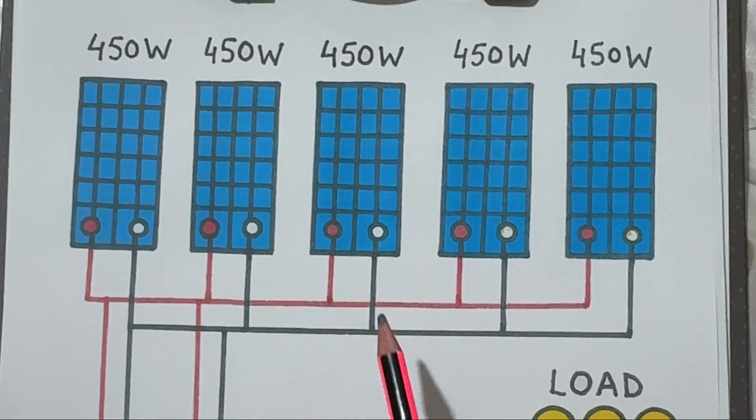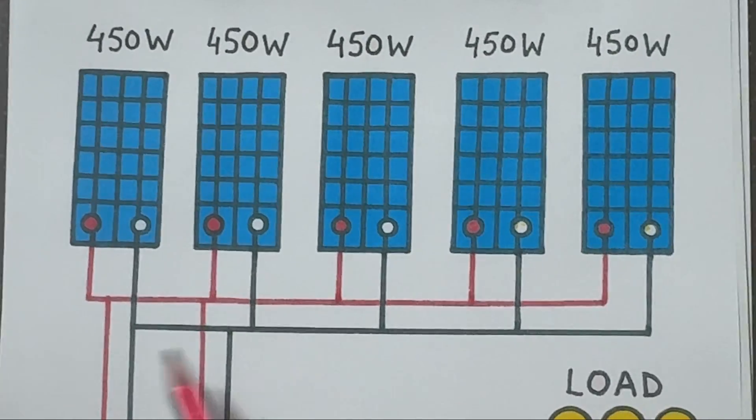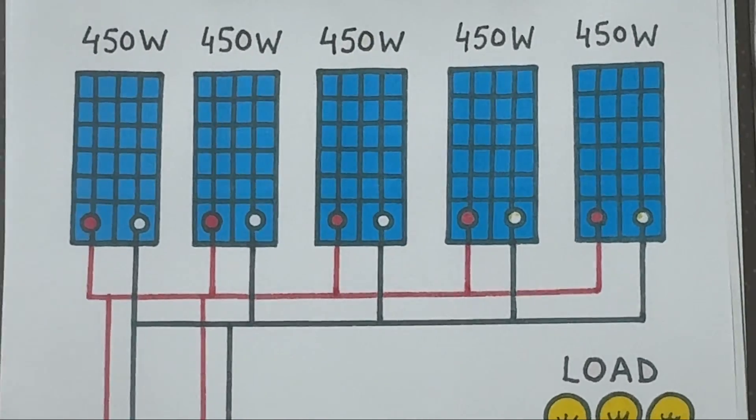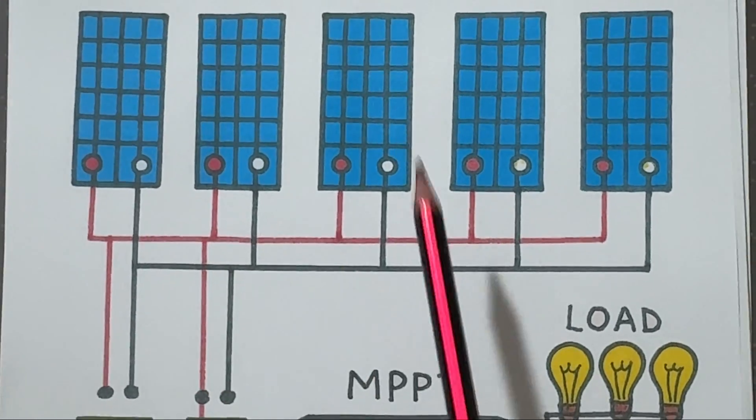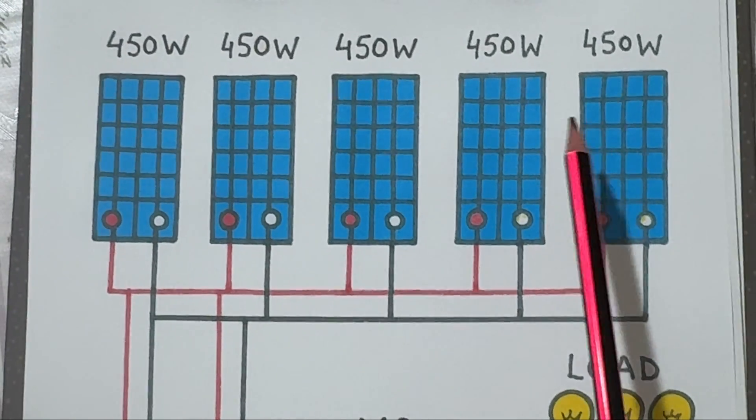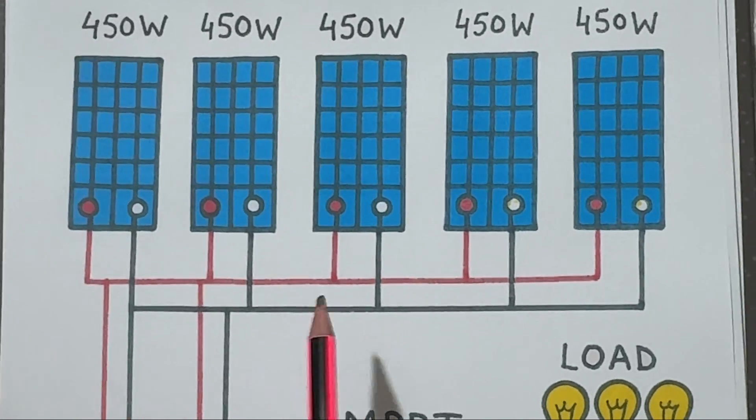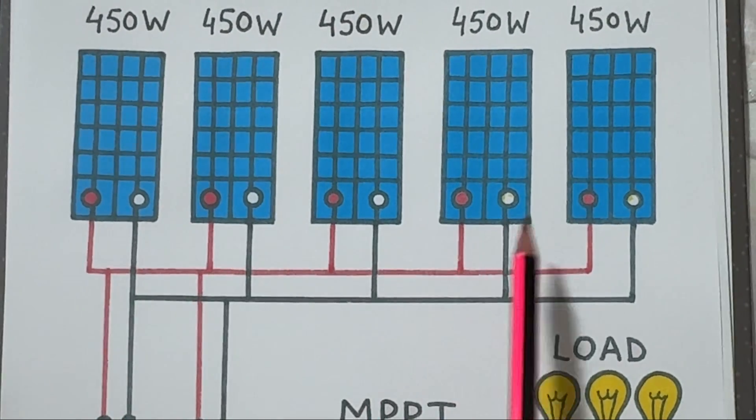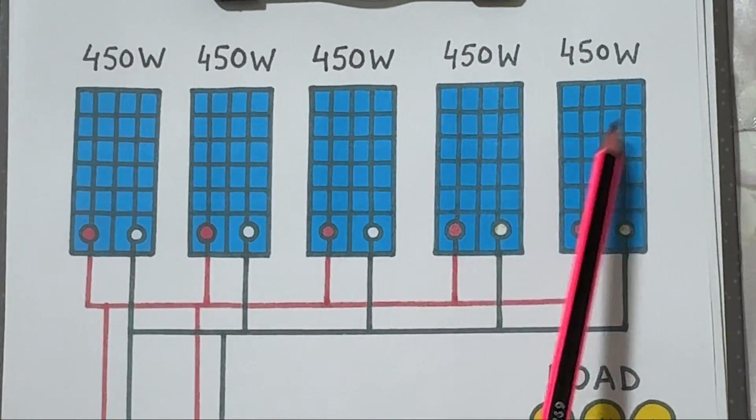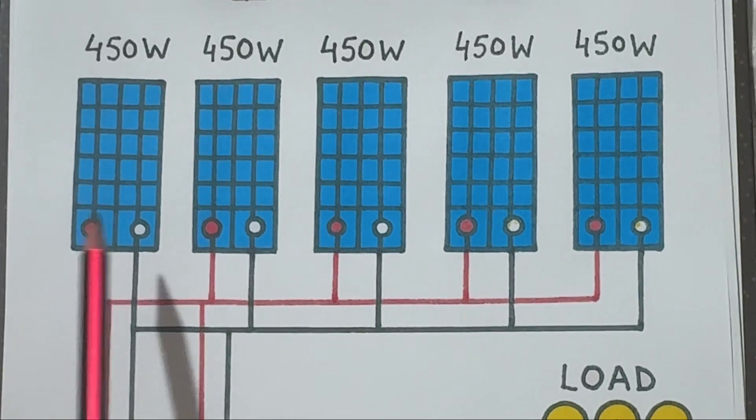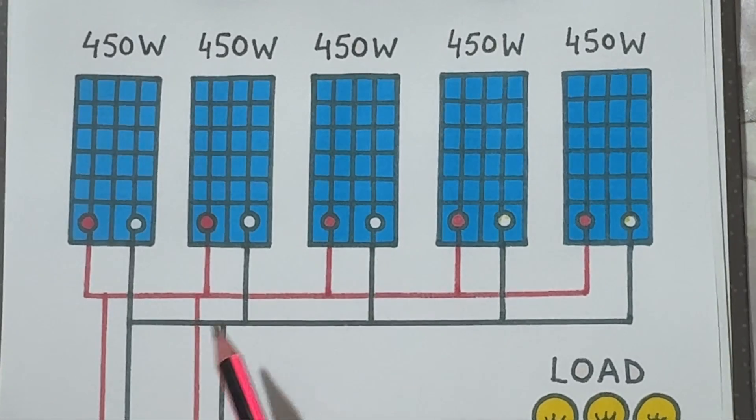This means the positive terminals are joined together and the negative terminals are also joined together. By connecting them this way, the voltage stays the same but the current increases. So the total power from the five panels adds up: that's 450 watts times five equals 2,250 watts or 2.25 kilowatts of solar power.